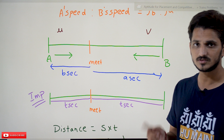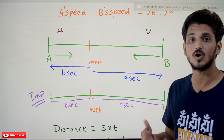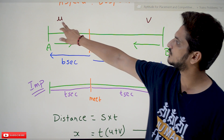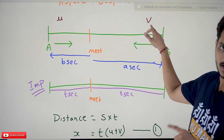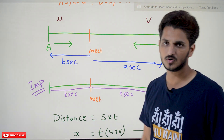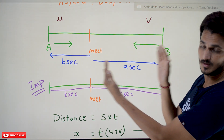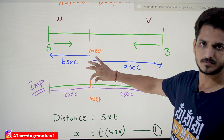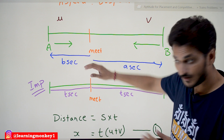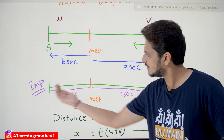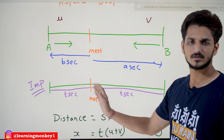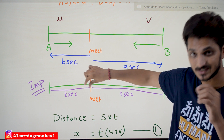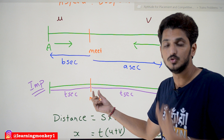So the ratio of their speeds is square root of B to square root of A. How did we get that? Let's understand. We assume the speed of train A is U and the speed of train B is V. One important point: whenever two objects move towards each other and meet, both have been traveling for the same amount of time T by the moment they meet. That is the key logic we will use to derive this formula.